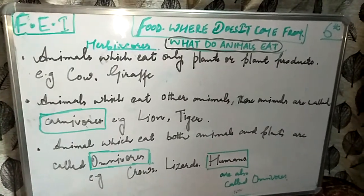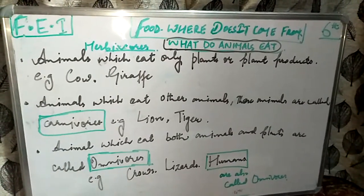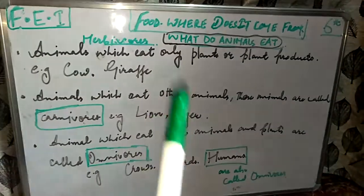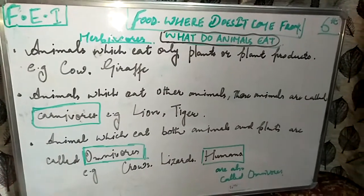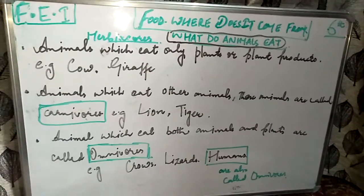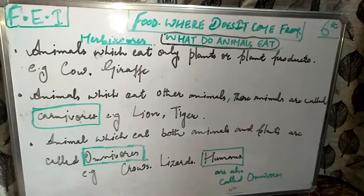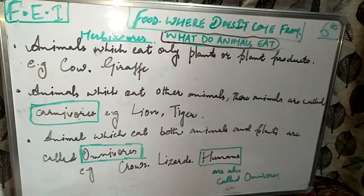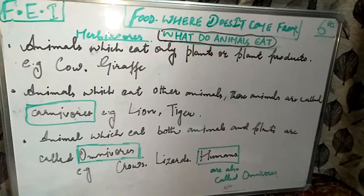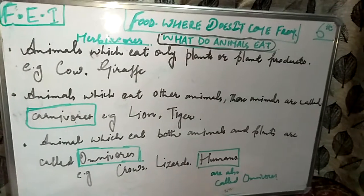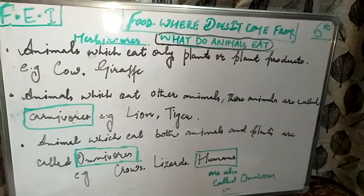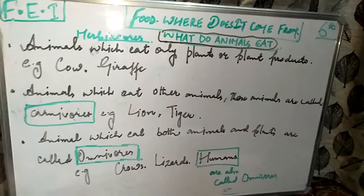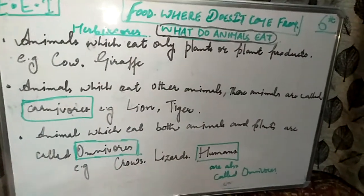Assalamualaikum, how are you all? This is your science teacher, and we are going to start our next lecture today: What do Animals Eat, from the chapter Food: Where Does It Come From? We have already learned about food variety — that we eat different types of food to get different types of nutrients. Today we are going to study what animals eat.